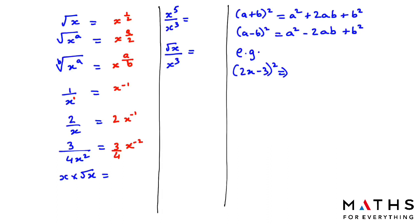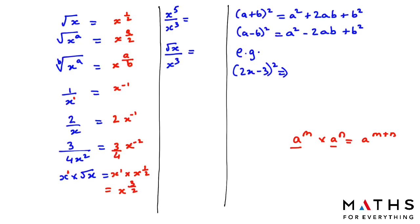For x multiplied by square root x: this is x to the power of 1 times x to the power of half. We use the indices multiplication rule — if the base is the same, we add the powers. So this can be written as x to the power of 3 over 2, because 1 plus half equals 3 over 2.